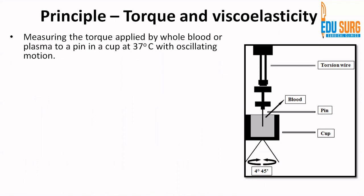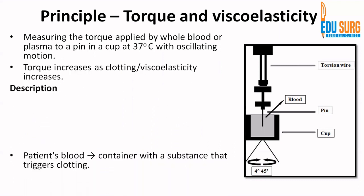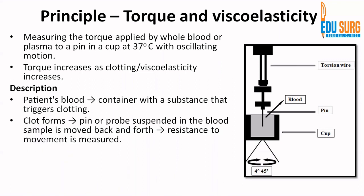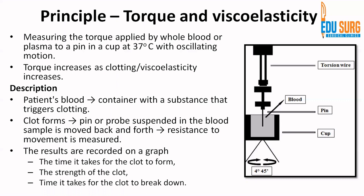The pin will rotate when the cup is oscillated. The container has a substance that triggers clotting, so when the patient's blood is put in the container, clotting is initiated. The torque on the pin increases as the clotting or viscoelasticity of the blood increases. Once the clot forms, the pin or probe suspended in the blood sample is moved back and forth and the resistance to this movement is measured. The results are recorded on a graph showing the time it takes for the clot to begin forming, the strength of the clot, and the time it takes for the clot to break down — basically the coagulation pathway, thrombus formation, and fibrinolysis pathway.